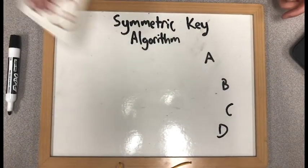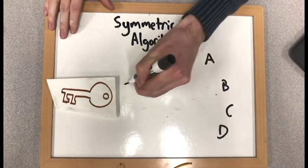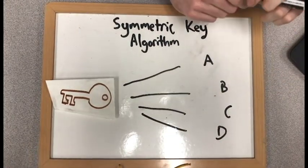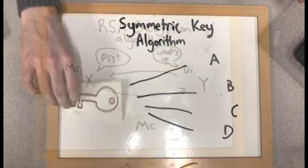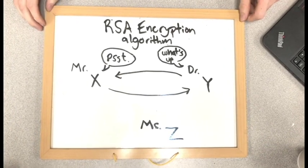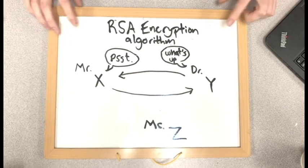Also, if one party, let's call him Mr. X, needs to communicate with many clients, he would require a separate key for each client, which can be difficult to keep track of. For these reasons, the symmetric key algorithm has been replaced in modern cybersecurity by a more efficient and effective algorithm called the RSA encryption algorithm.